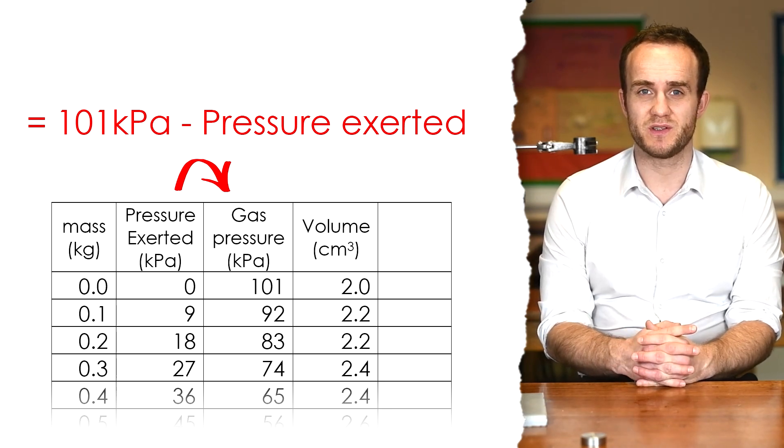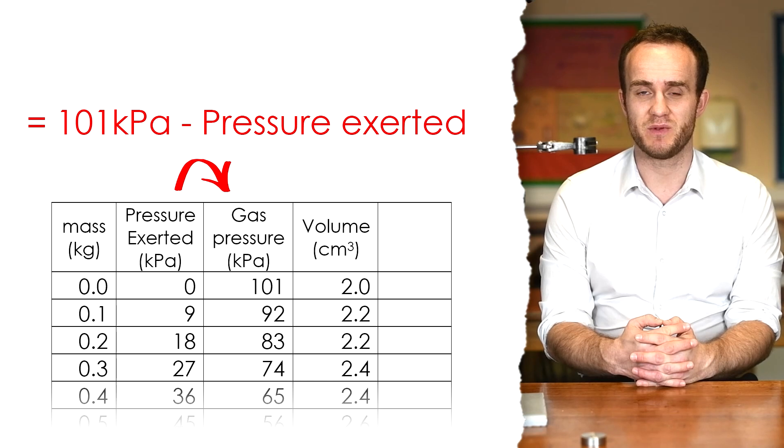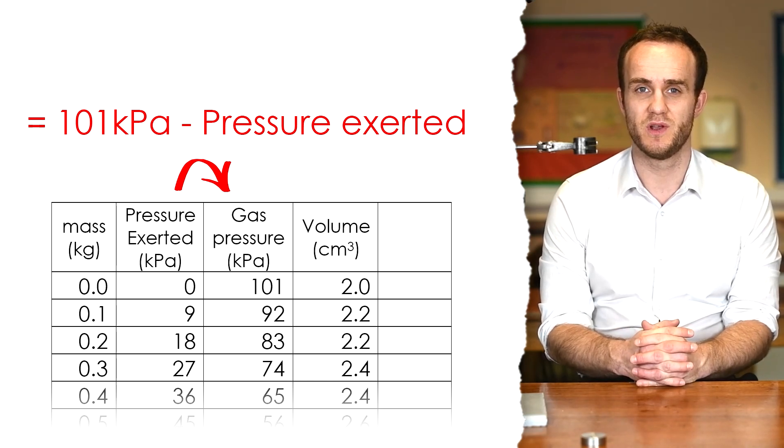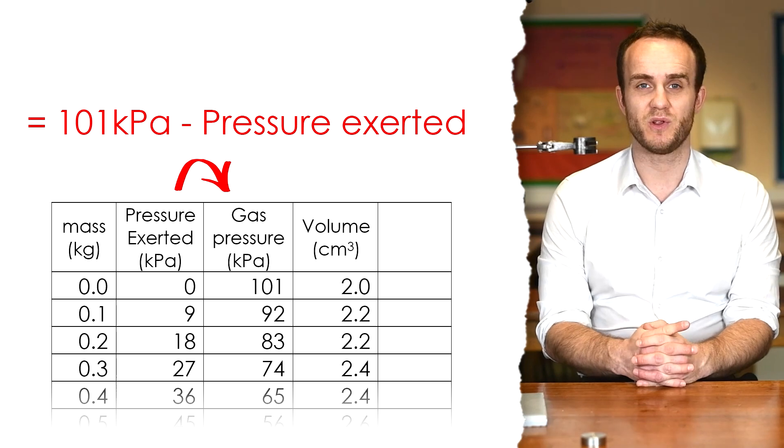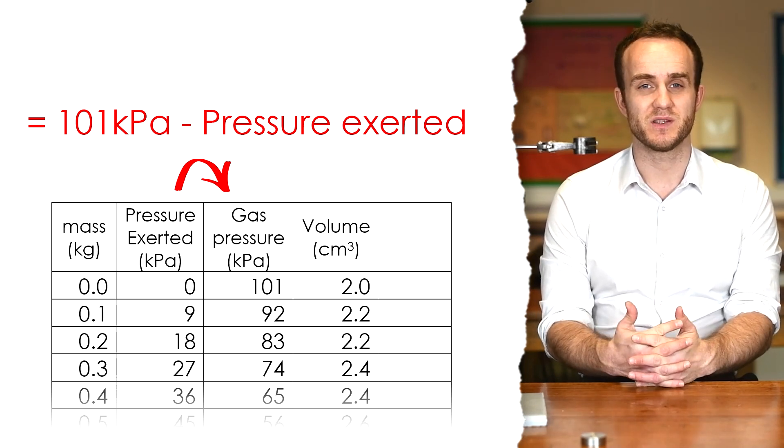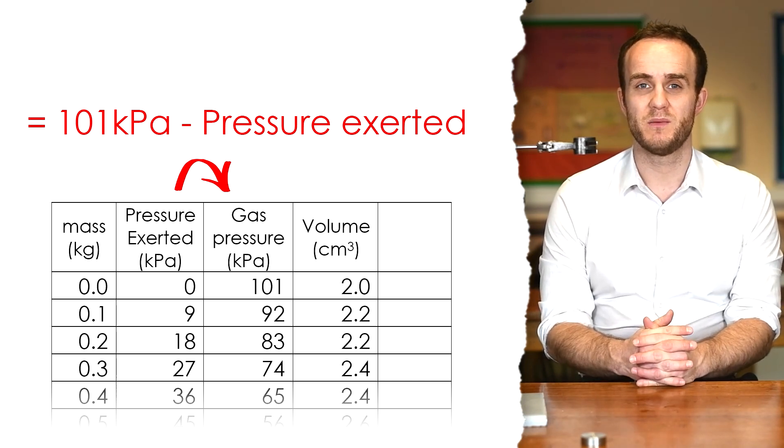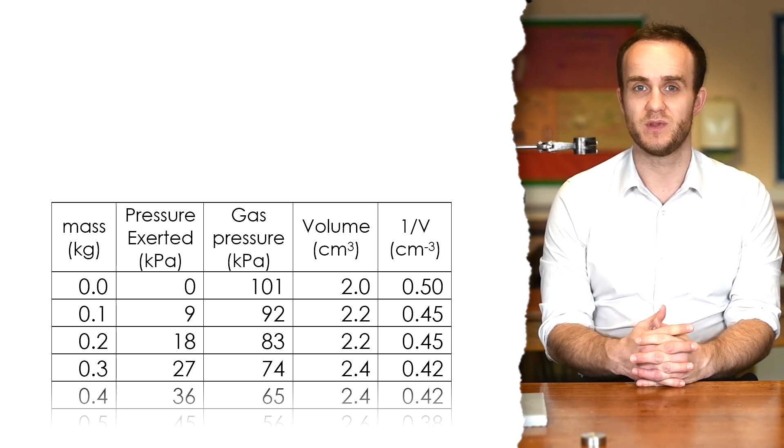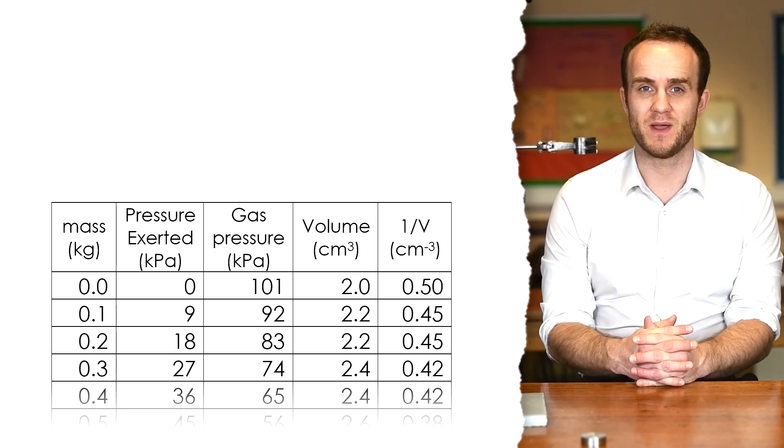Now we want to draw a graph to see if our relationship is correct, that pressure is inversely proportional to volume. So, we're not going to plot P against V, because they aren't proportional, we're going to plot P against 1 over V, the reciprocal of the volume, or vice versa, it doesn't really matter.